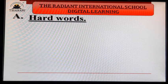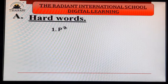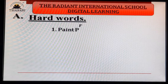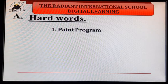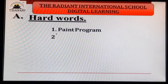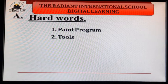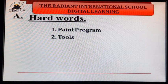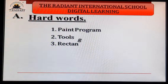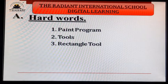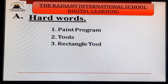First hard word: P-A-I-N-T — paint. P-R-O-G-R-A-M — program. Paint program. Second: T-O-O-L-S — tools. Third: R-E-C-T-A-N-G-L-E — rectangle. T-O-O-L — tool. Rectangle tool.